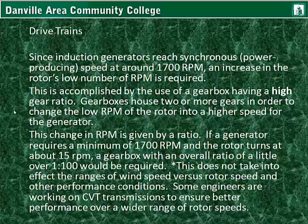Gearboxes house two or more gears to change the low RPM of the rotor into a higher speed for the generator. If a generator requires a minimum of 1700 RPM and the rotor turns at about 15 RPM, a gearbox with an overall ratio of a little over 1 to 100 would theoretically be required. A ratio of 1 to 25 or even 1 to 50 would be more realistic. Also, with doubly fed induction generators and other generator types, it is not necessary to keep the high speed shaft right around 1700 RPM — this is just an example.